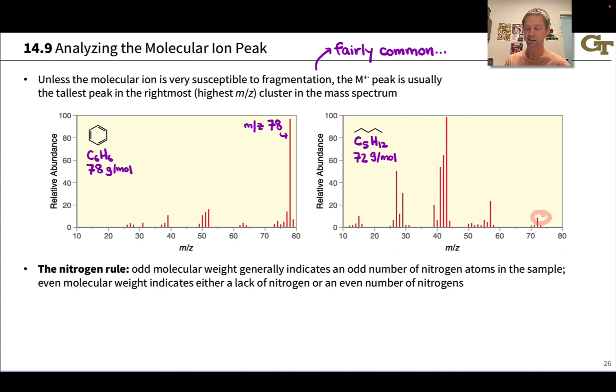At 72 we've got a relatively tall peak in this cluster, that's the molecular ion peak. But the base peak is down here at 43 m/z. Here we have a case where the base peak and the molecular ion peak differ.